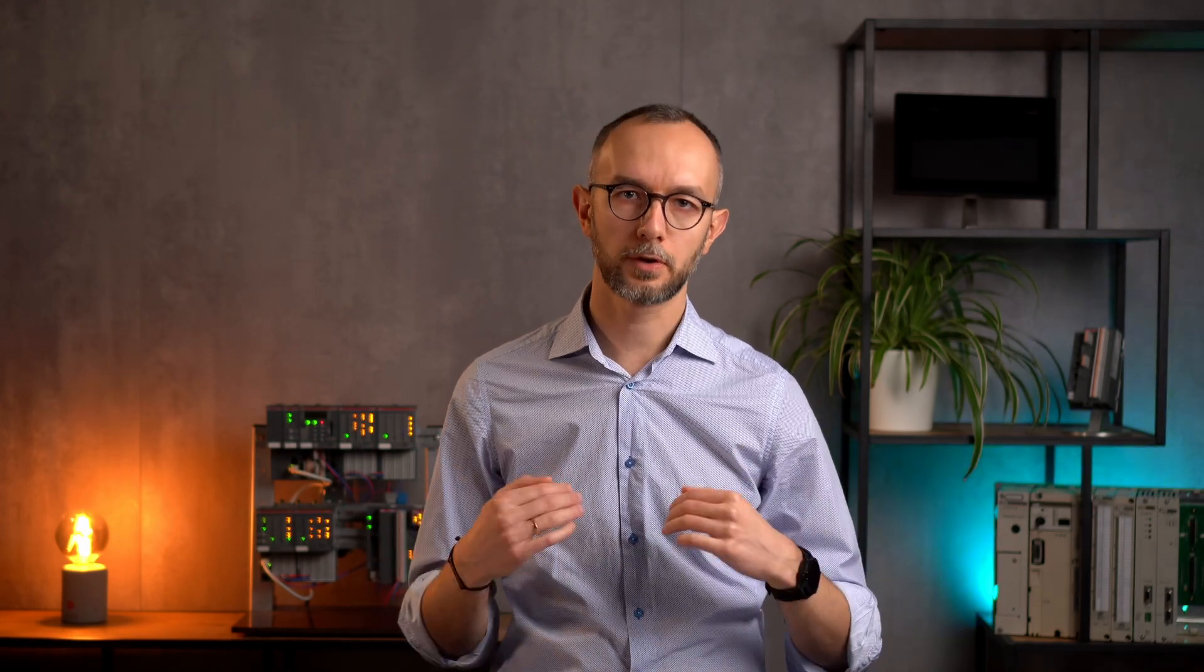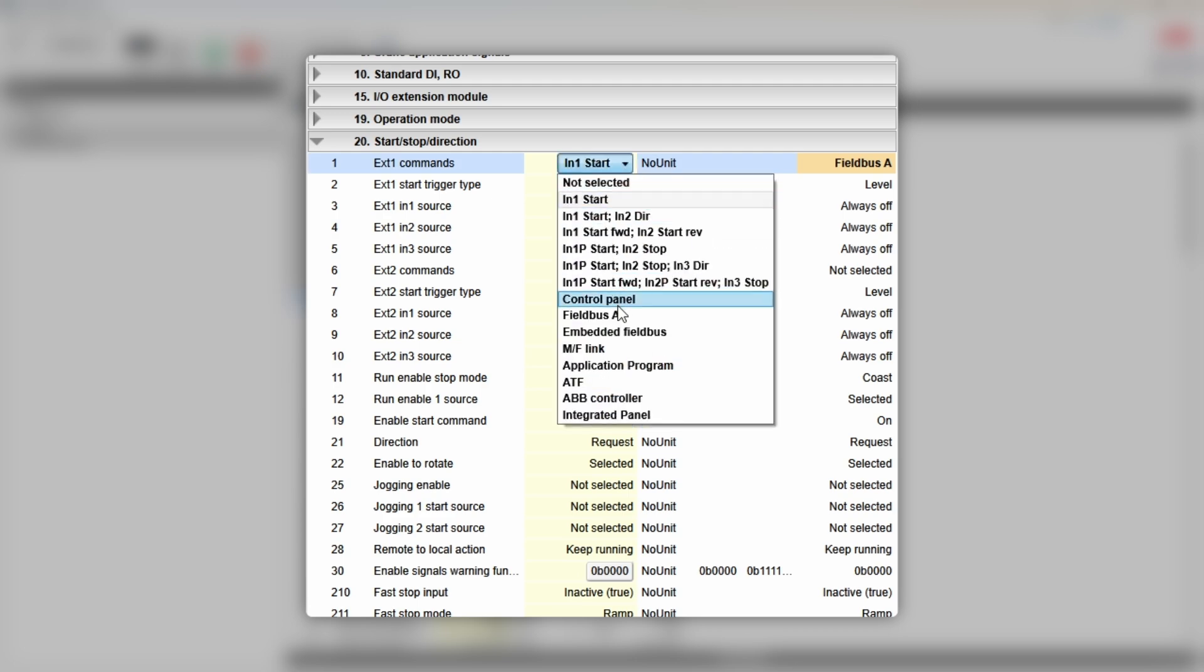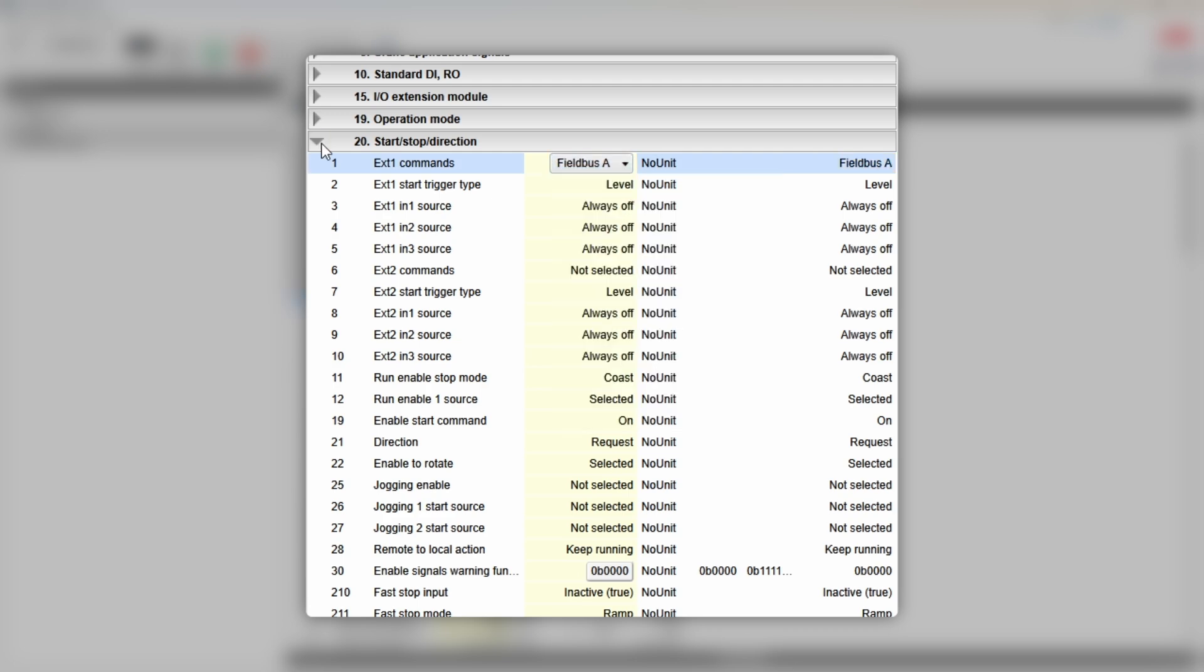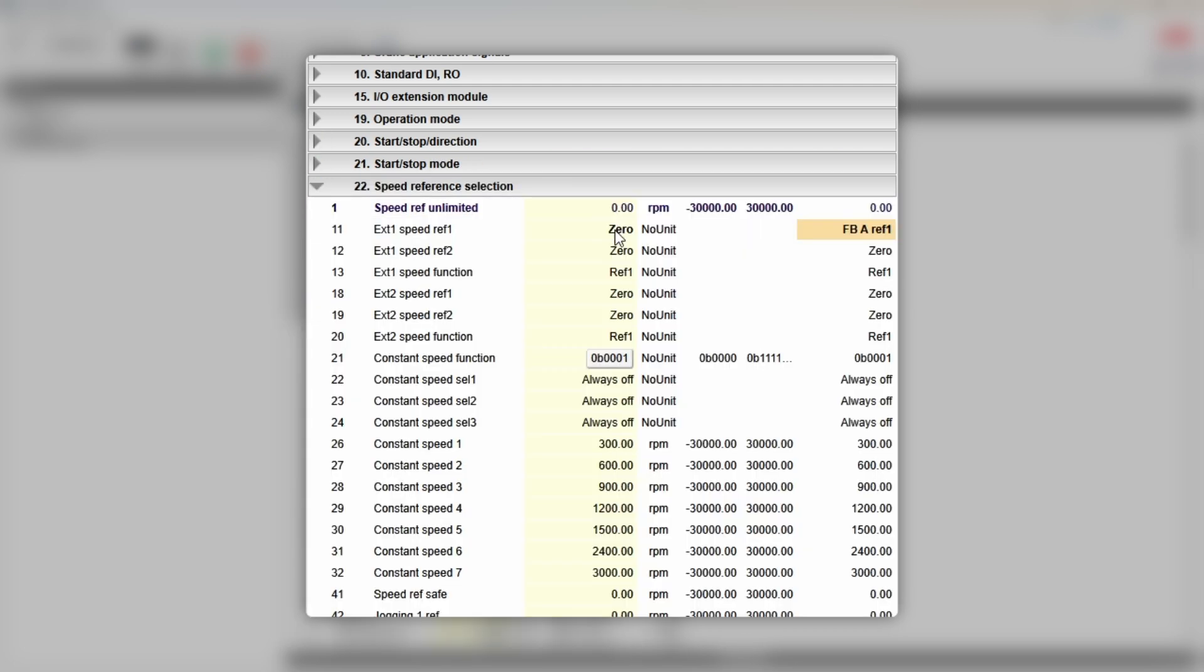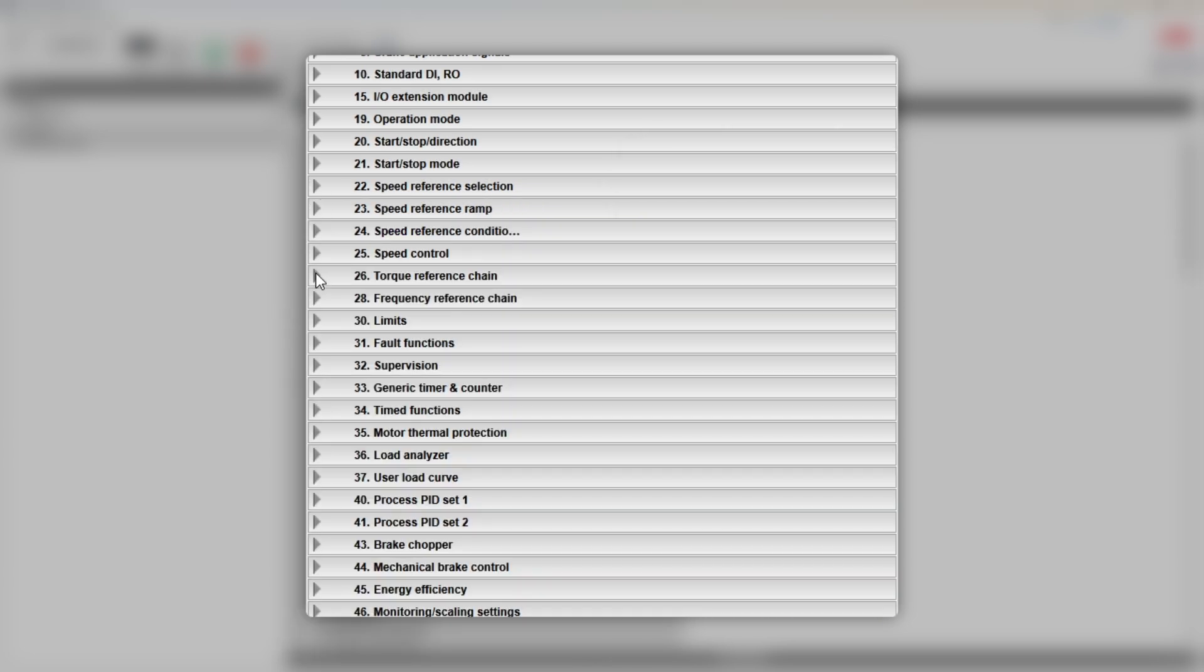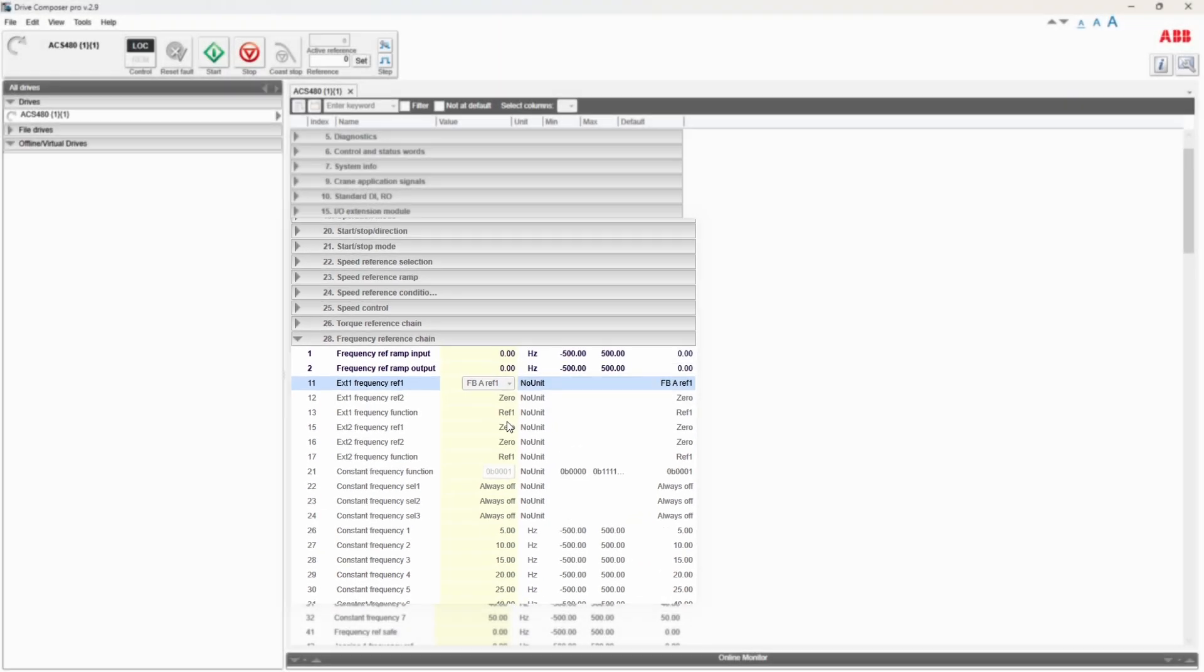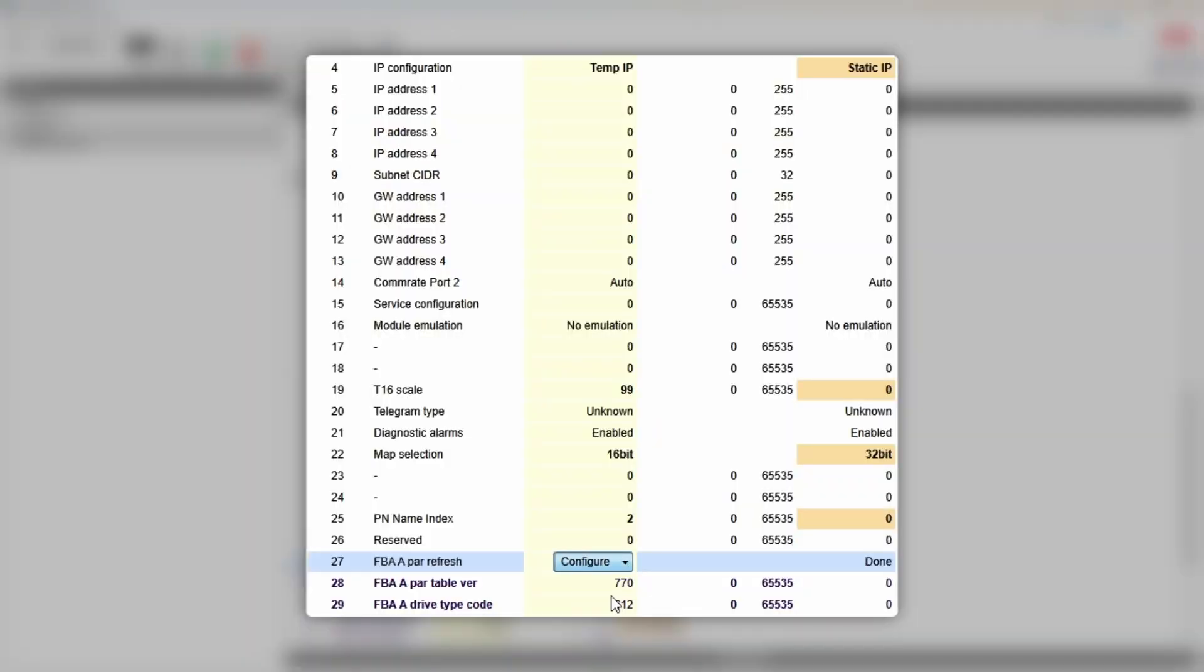And the last thing we need to make the drive accept commands and references coming from a network: go to group 20 and change ext1 commands to fieldbus adapter. If you use vector control mode, go to group 22 and change parameter 11 to FBA ref1. If you use scalar mode, then go to group 28 and set parameter 11 to the same value. And that's pretty much it with the drive configuration. Don't forget to either power cycle the drive or flip the FBA refresh parameter.